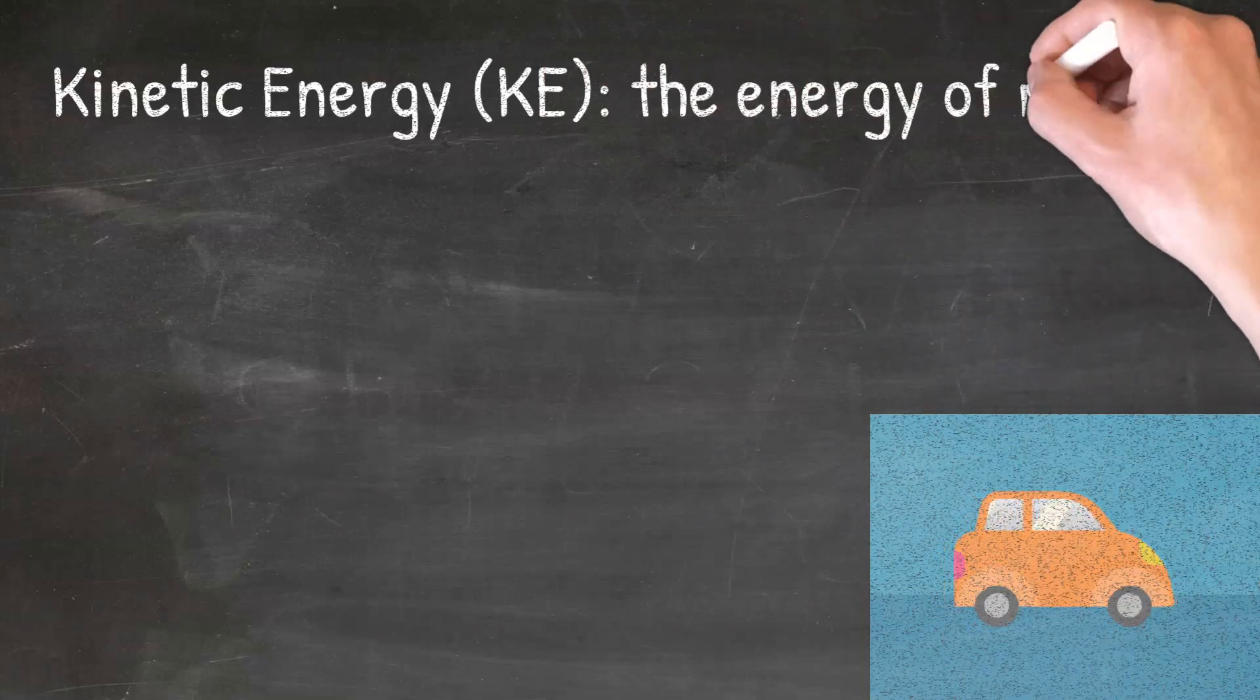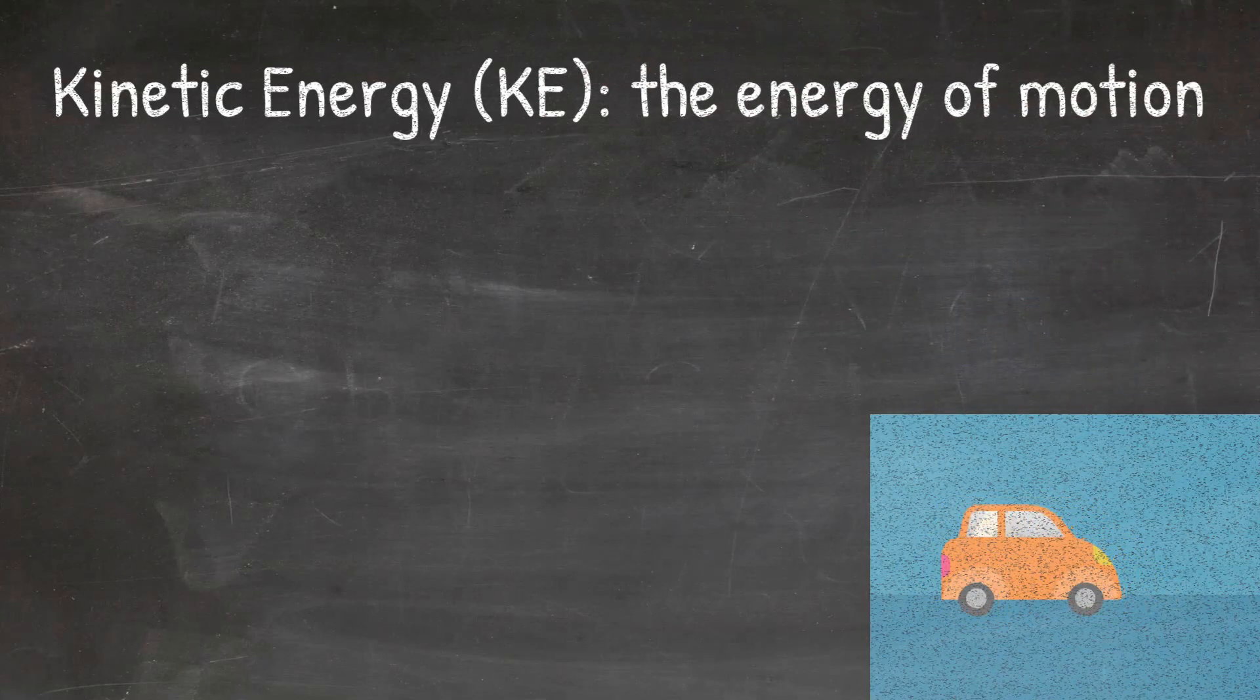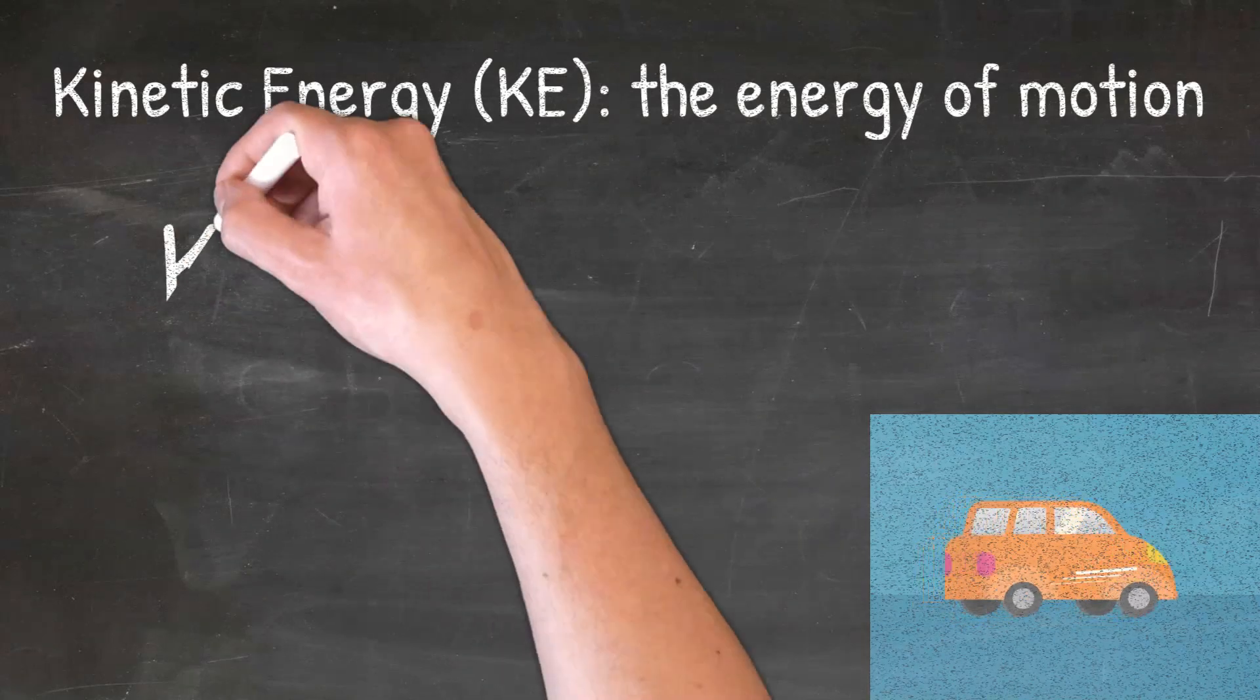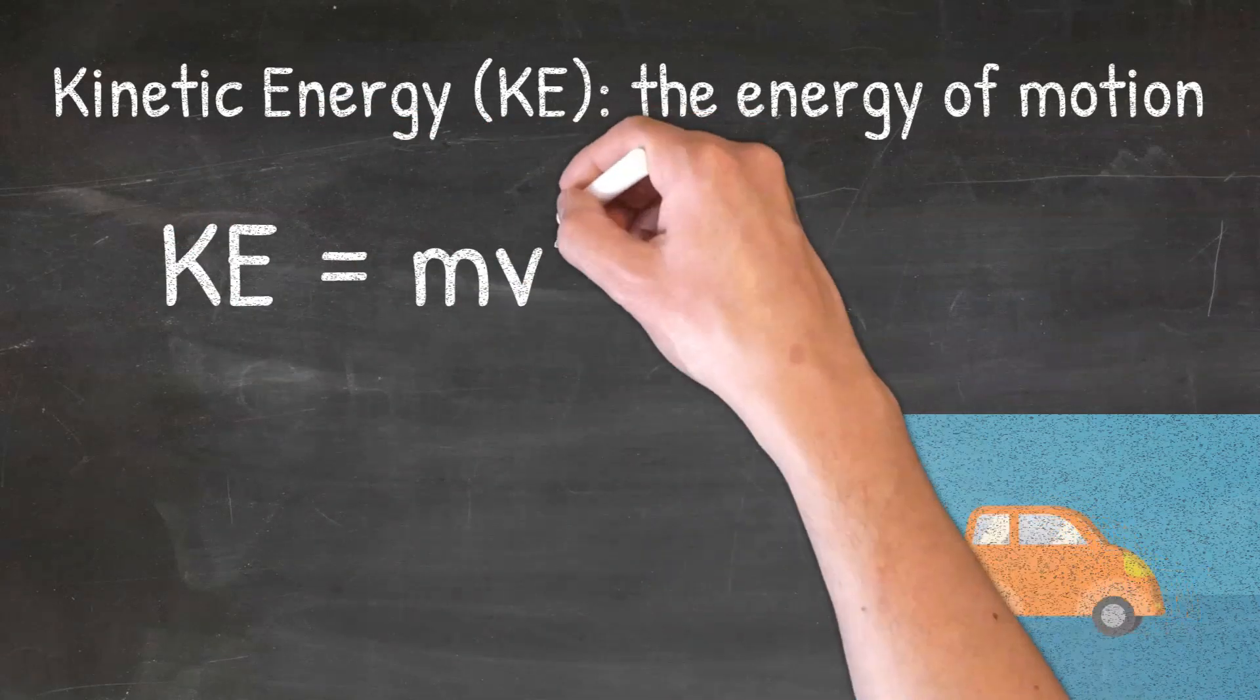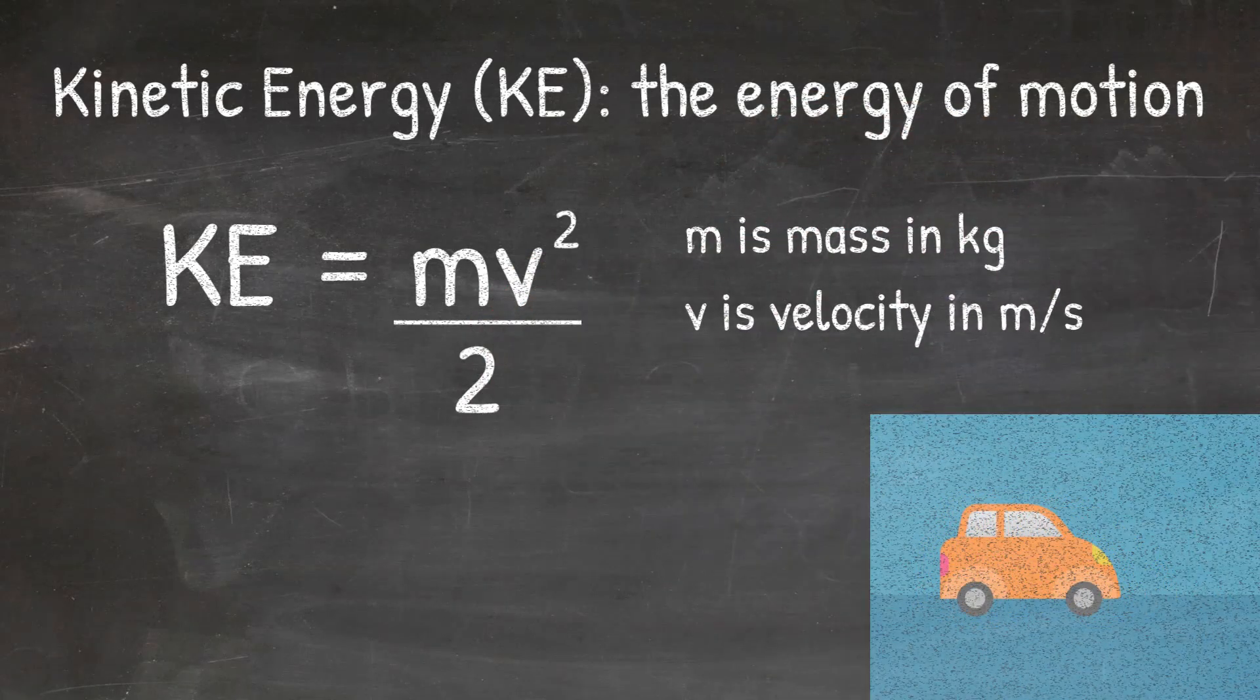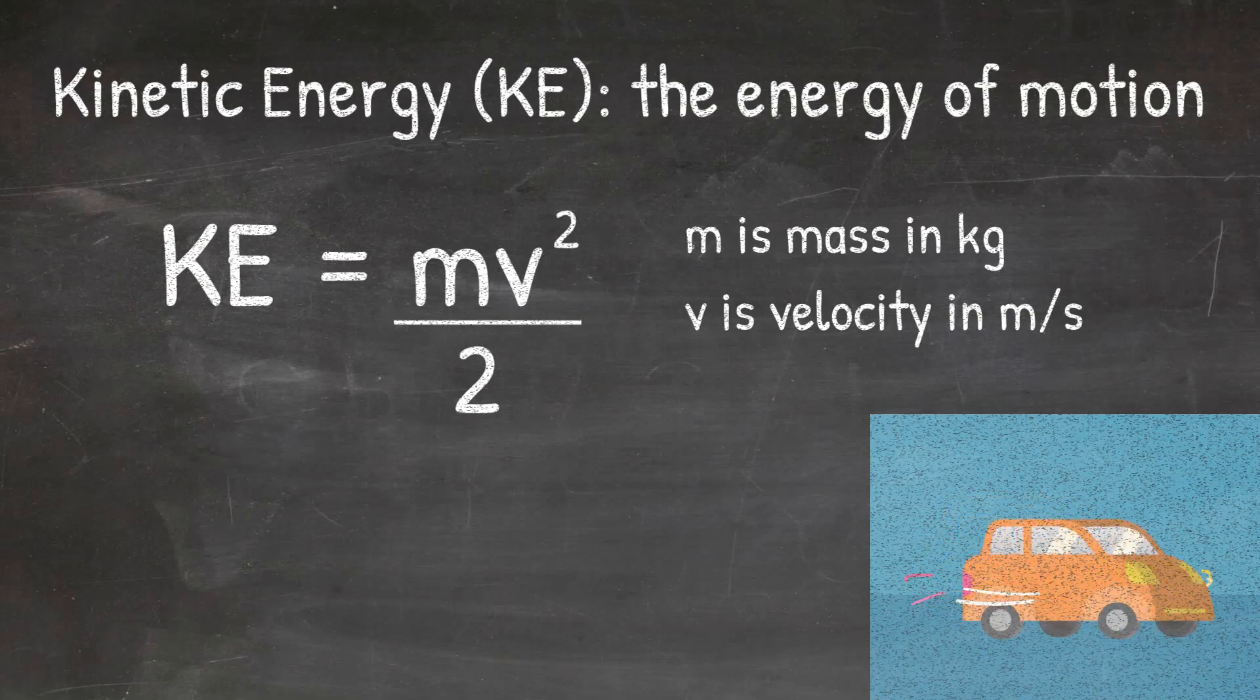Kinetic energy is the energy of motion. If an object is moving, then it has kinetic energy. So the moving car here has kinetic energy because it is moving. The formula that we will use to calculate kinetic energy will be KE equals mv squared divided by 2, where m is mass in kilograms and v is velocity in meters per second. We will look at how to use this formula to solve for kinetic energy in a later video.